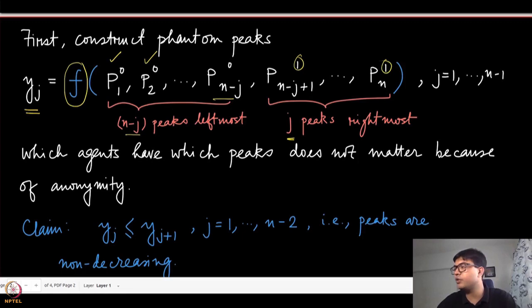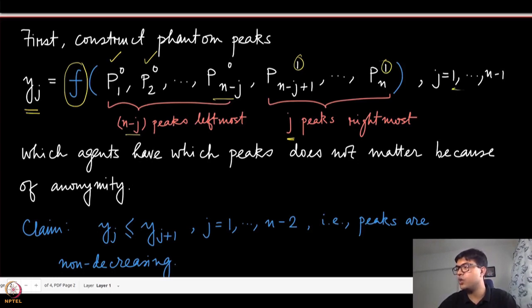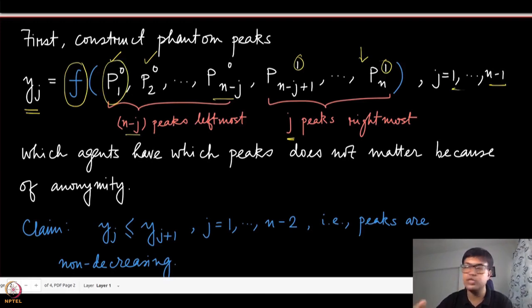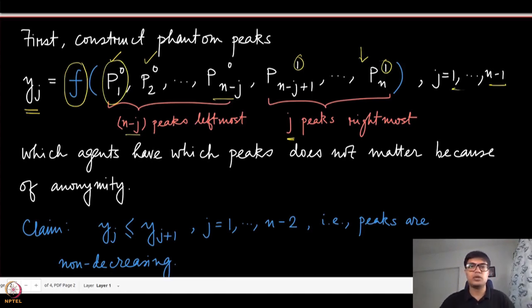As j increases from 1 to n minus 1, we get a sequence of phantom peaks. The first one has n minus 1 peaks at the leftmost and one at the rightmost; by y_{n-1}, only the first agent's peak is at the leftmost and everything else is at the rightmost. Sequentially, one by one, we are moving leftmost peaks to the rightmost, and that is how y_j is defined.